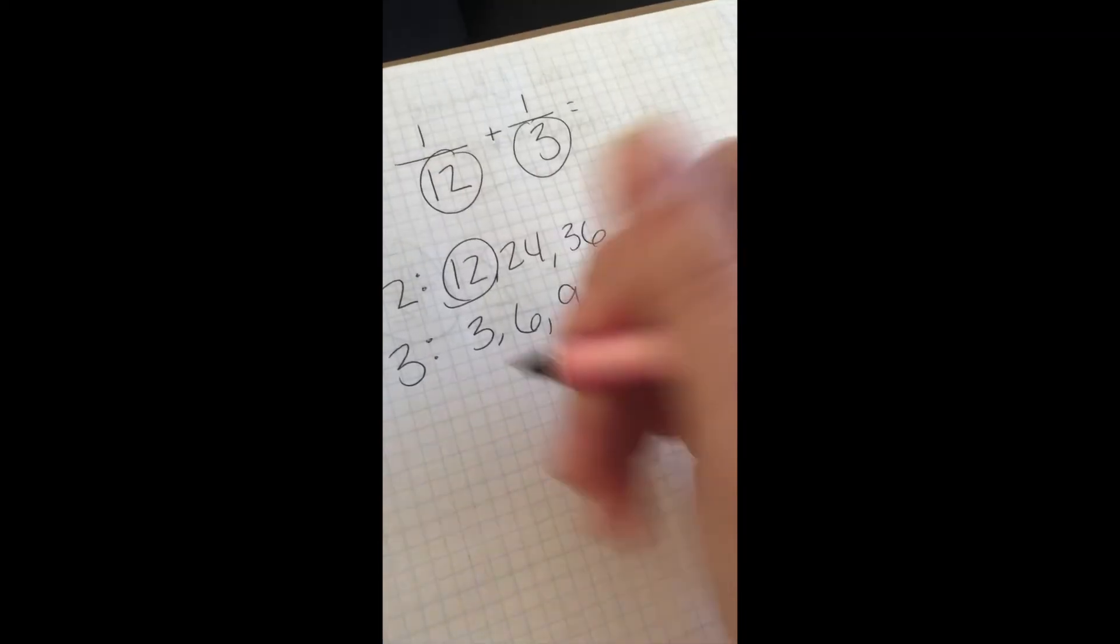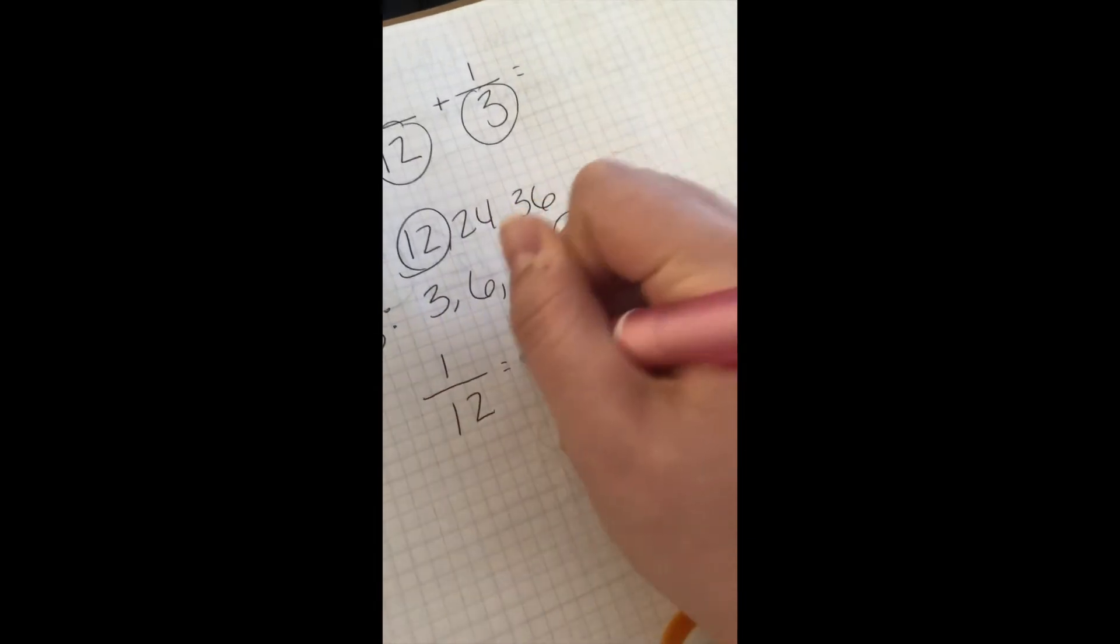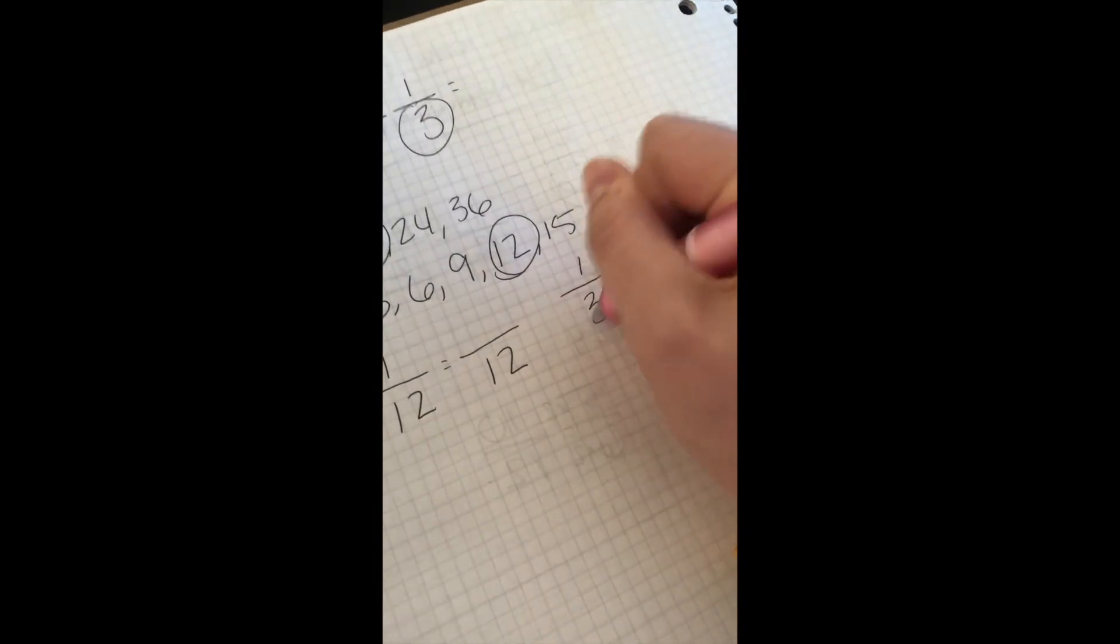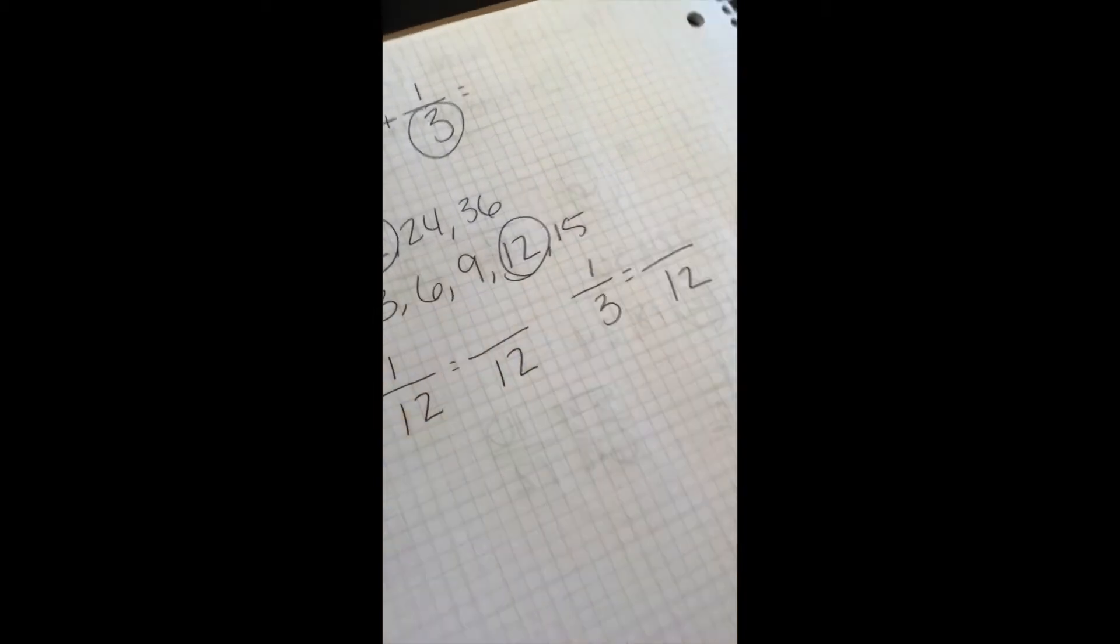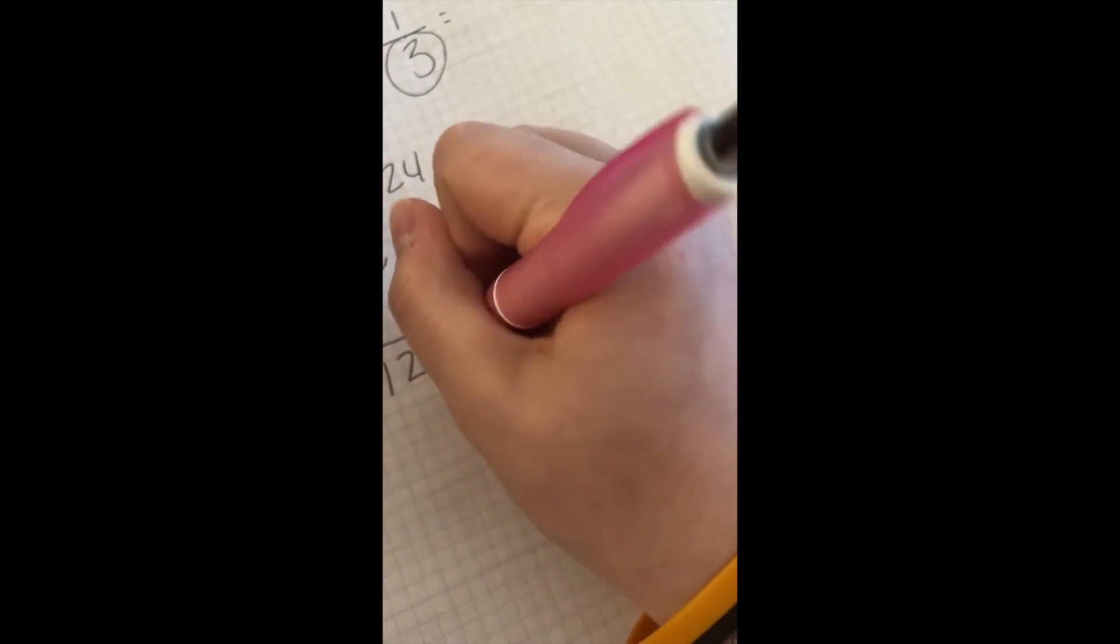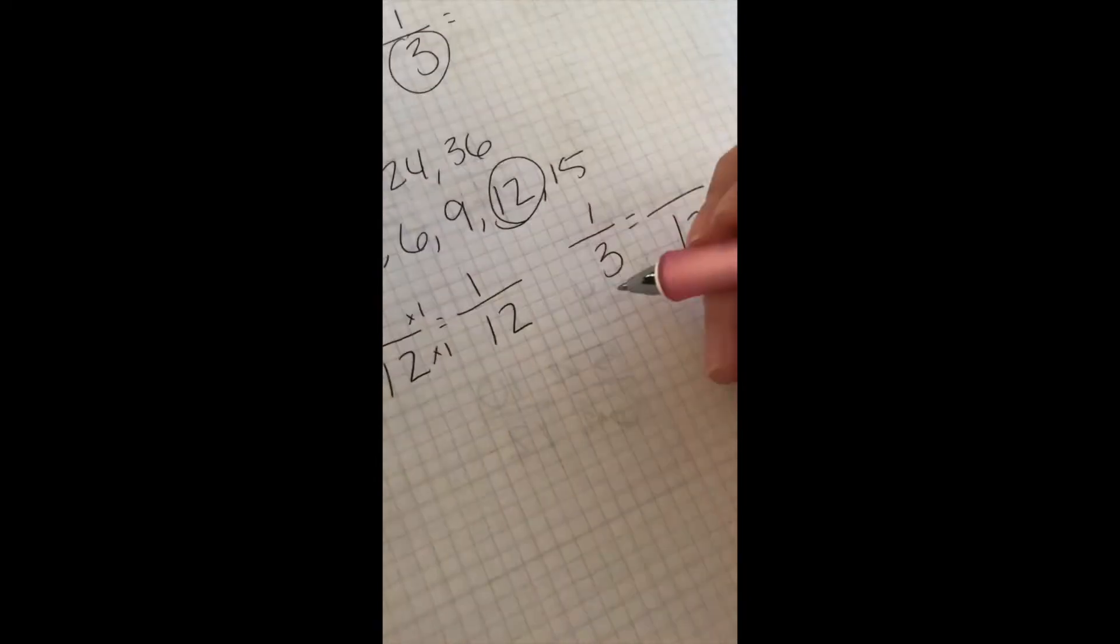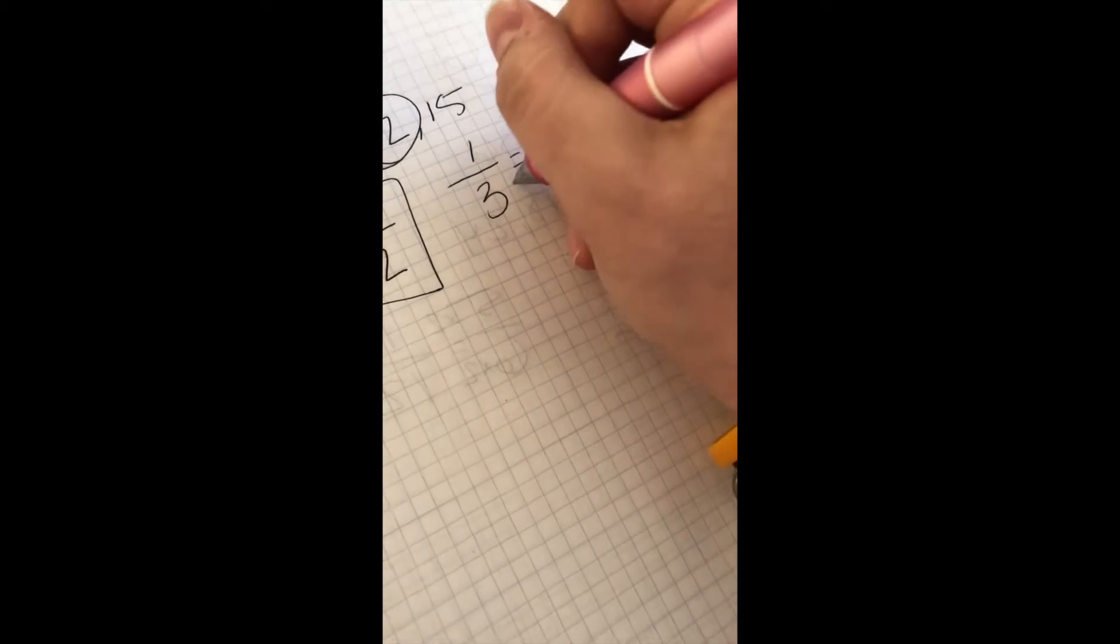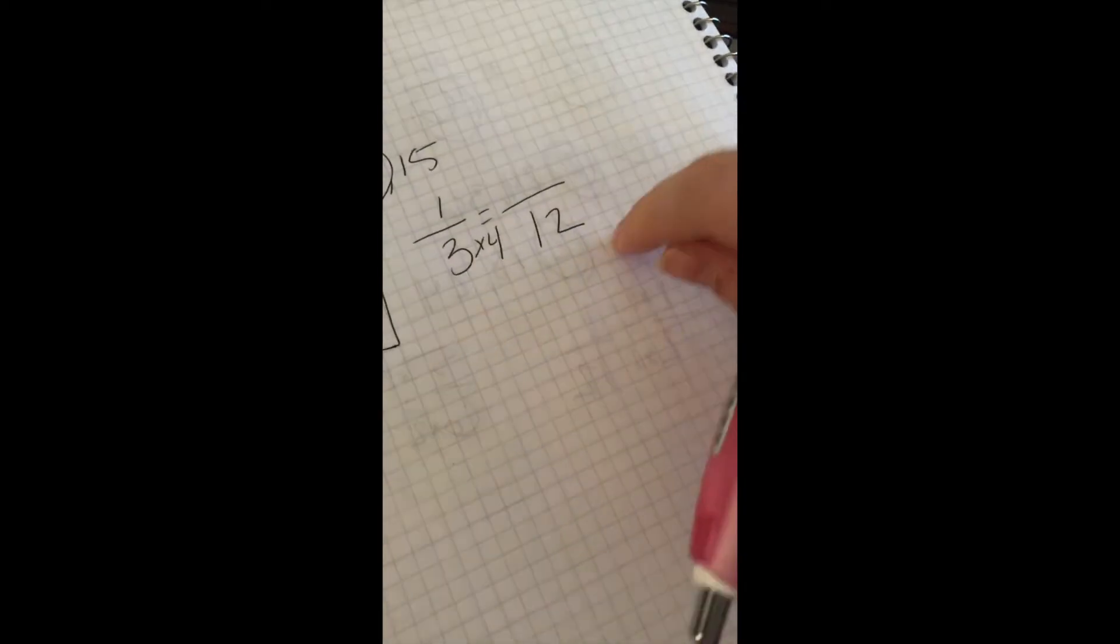So then I would set up my fractions again. I have 1 twelfth equals something over 12, and then 1 third equals something over 12. So just like in the last one, 1 twelfth, you're just multiplying by 1, would stay 1 twelfth. And then for 1 third, this time I'm multiplying by 4, from 3 to get to 12. And same thing to the top, should be 4 twelfths.